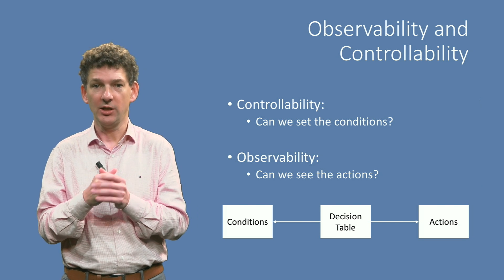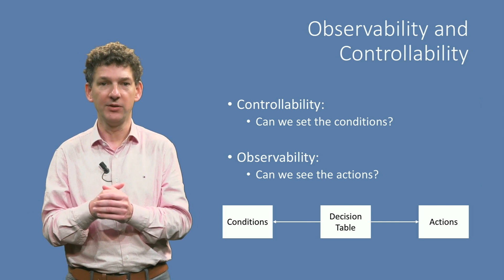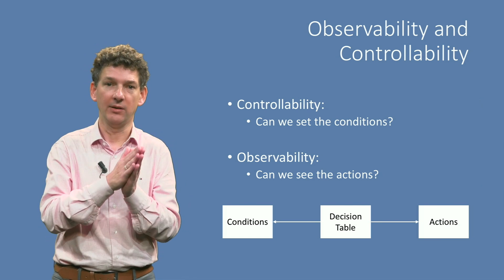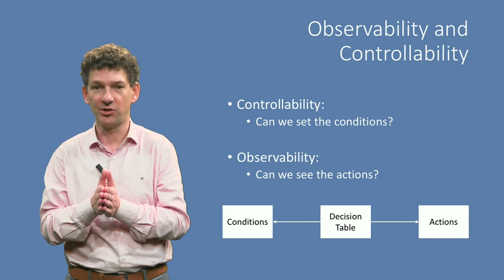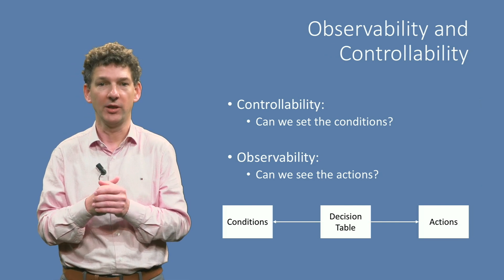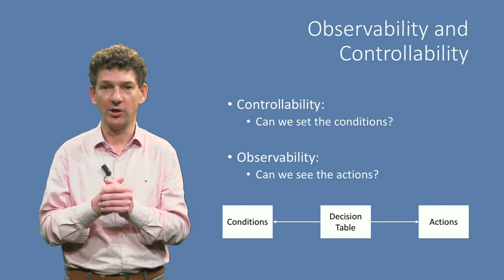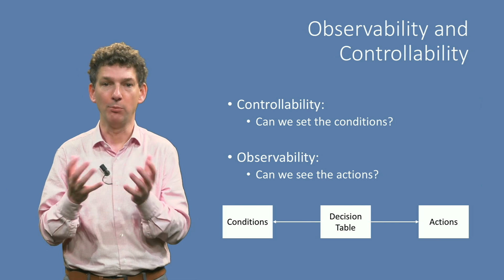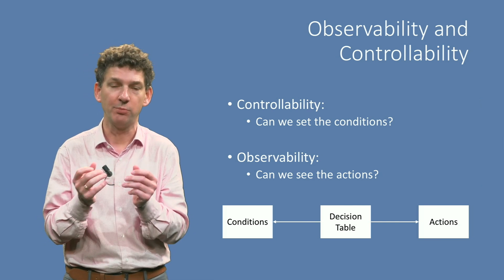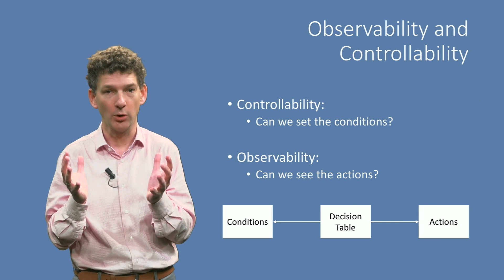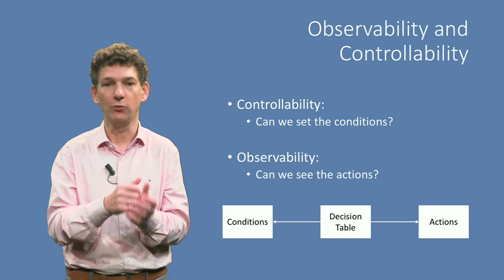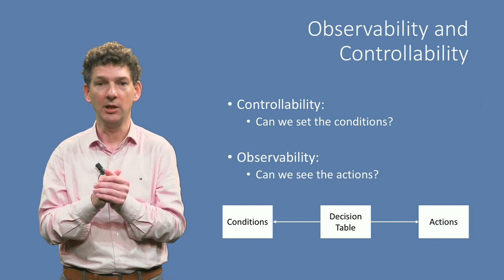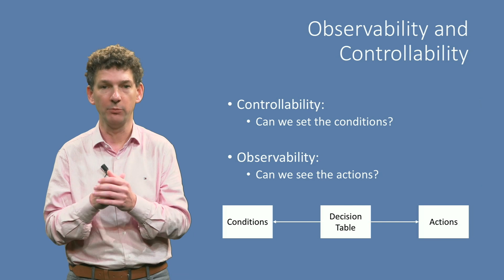What we want to test is whether the decision logic is correctly implemented in the decision table class. To do that, we can assume that the conditions and actions themselves are properly unit-tested earlier. Thus, to test the decision logic itself, we can mock the conditions and actions. We mock the conditions so that they yield specific values, giving us the desired controllability. And we mock the actions so that we can verify that the right action has indeed been invoked, giving us the required observability.